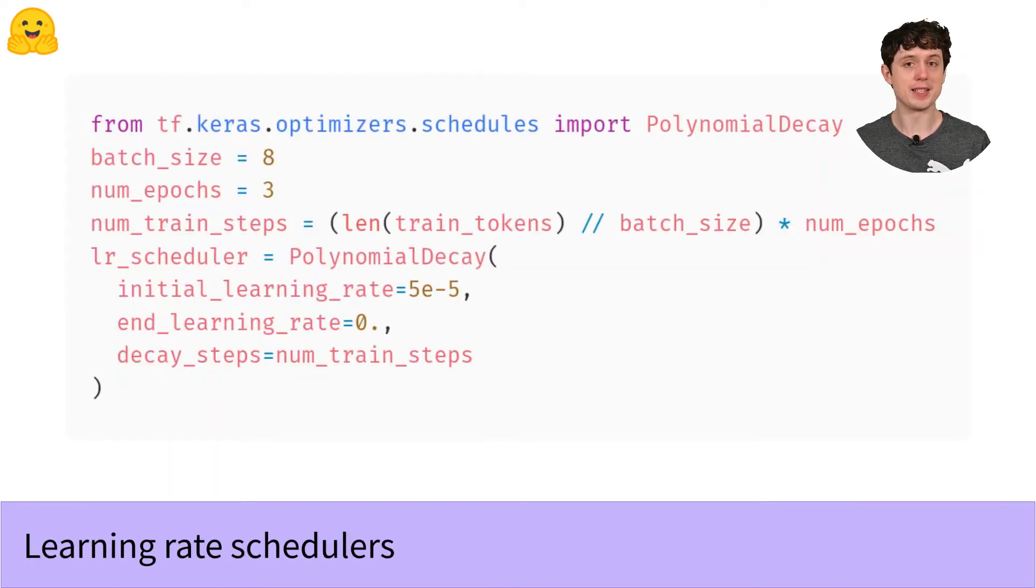And secondly, we don't just want a constant learning rate. We can get even better performance if we decay the learning rate down to a tiny value or even to zero over the course of training. So that's what this polynomial decay schedule thing is doing.